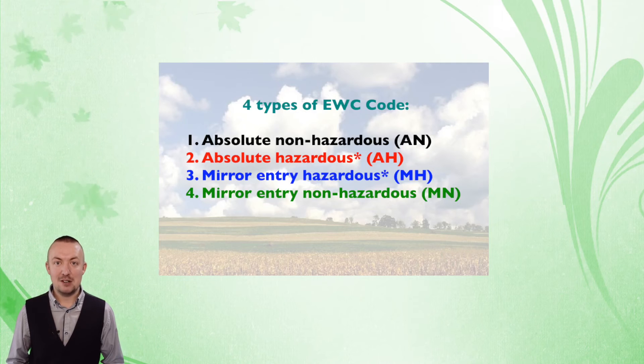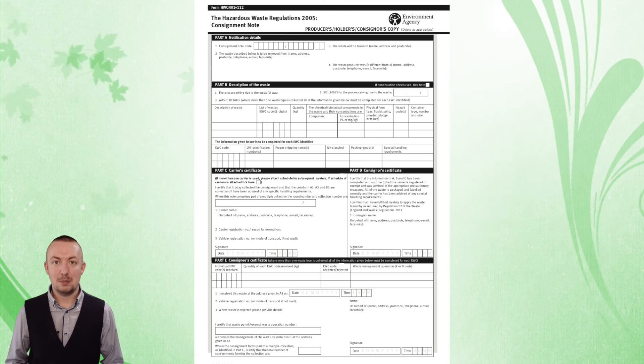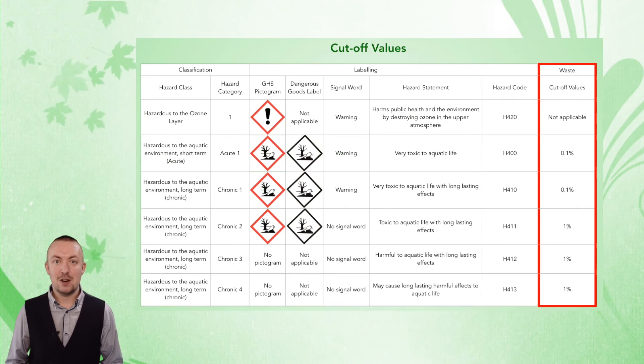When assessing wastes using the criteria for HP 14, which is something you do for mirror entry EWC codes and also for absolute hazardous entry EWC codes in order to determine the hazard property code to use on the hazardous waste consignment note or the waste consignment note or the special waste paperwork, there are certain cut-off values which apply to substances used in assessment. Substances below these thresholds will not count towards the assessment of HP 14.